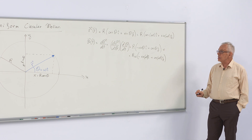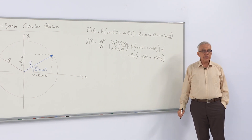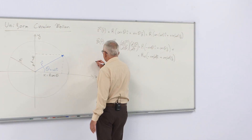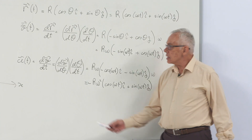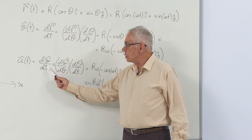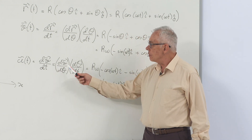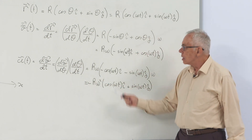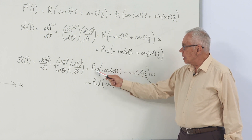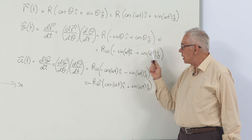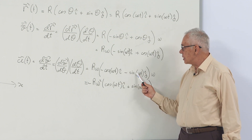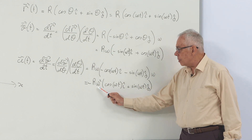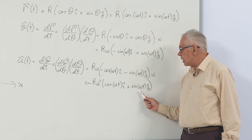Now this is the velocity. To find the acceleration, I take the derivative of this with respect to time. The acceleration is found by again taking the derivative with respect to theta and multiplying by the derivative of theta, which is the constant omega. The derivative of sine gives cosine, and the derivative of cosine gives minus sine, and the derivative of theta gives omega. The result is minus r omega squared times (cosine(ωt) i plus sine(ωt) j).